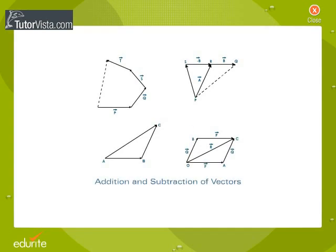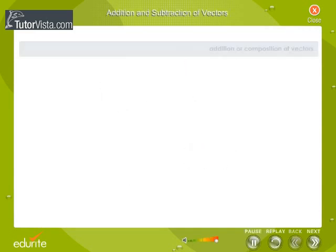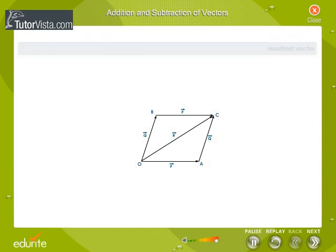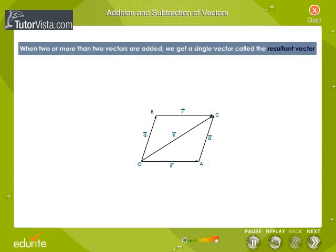Addition and subtraction of vectors. The process of adding two or more than two vectors is called addition or composition of vectors. When two or more than two vectors are added, we get a single vector called the resultant vector. The resultant of two or more than two vectors is a single vector which produces the same effect as the individual vectors together produce.